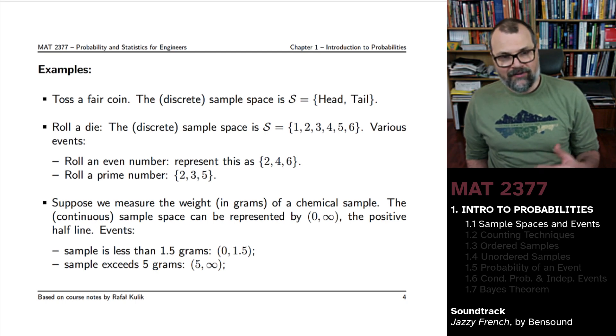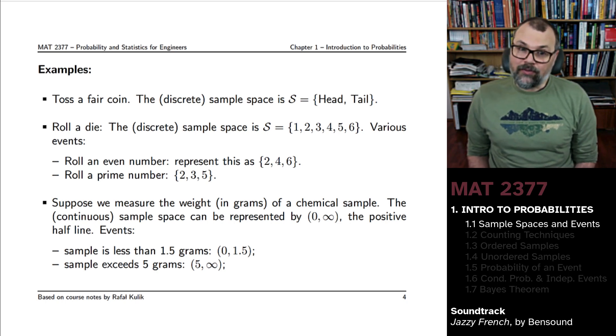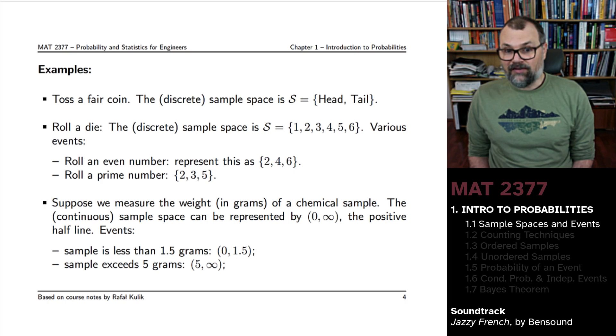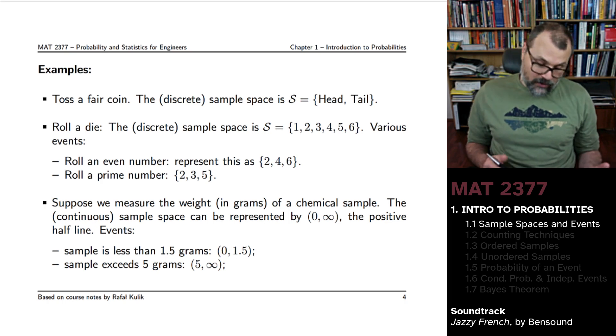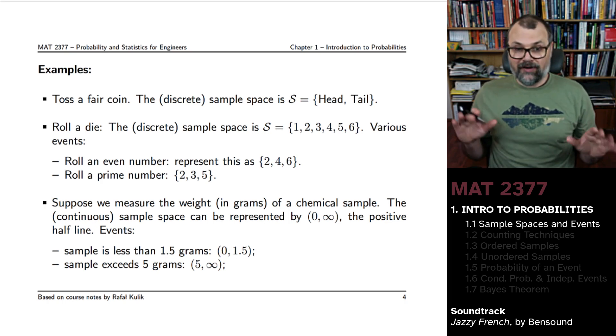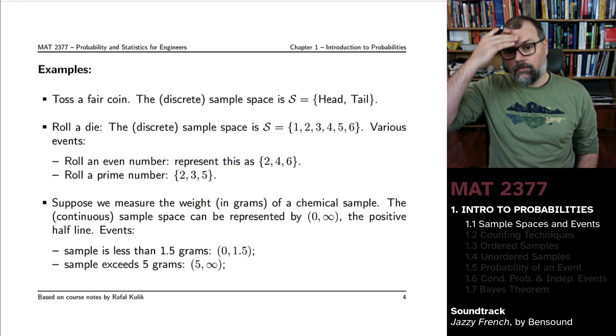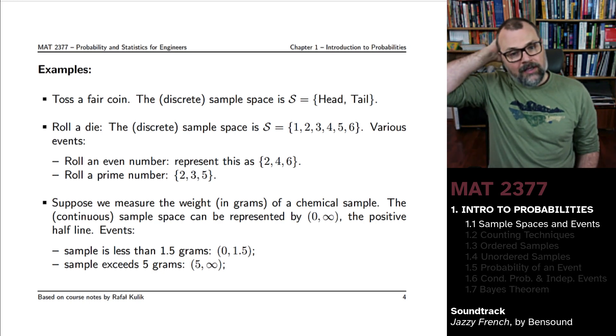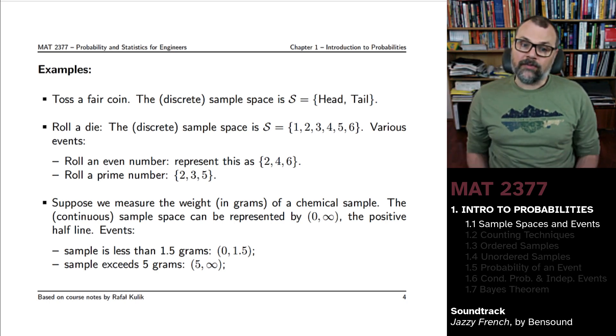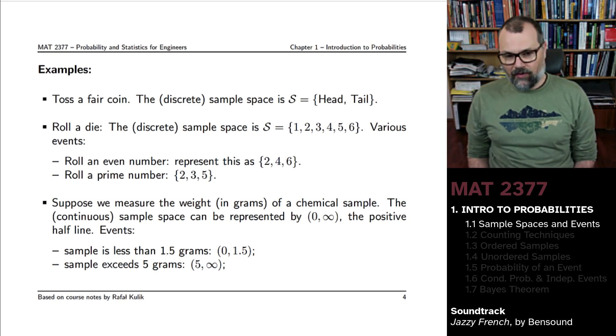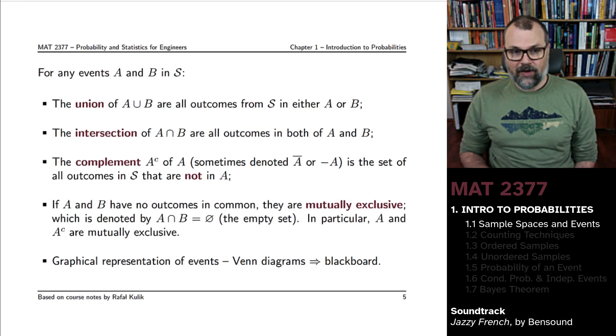So if you had events such as the sample weighs less than 1.5 grams, then you're looking at the interval between 0 and 1.5, excluding both of those. If you're looking at a sample which exceeds 5 grams, that event would be all the possible outcomes above 5 grams, excluding 5 grams.